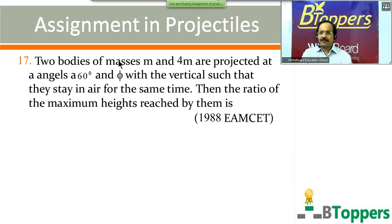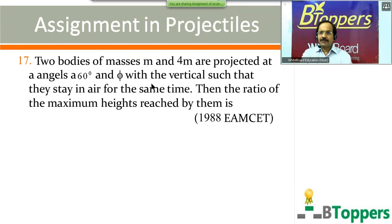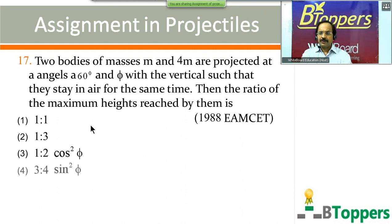Question number 17: two bodies of masses M and 4m are projected at angles 60 degrees and some angle θ with the vertical such that they remain in the air for the same time. The ratio of the maximum heights reached by them is — four options are shown on screen. This question was given in the 1988 MSET examination for both medical and engineering. Come on, try the question.